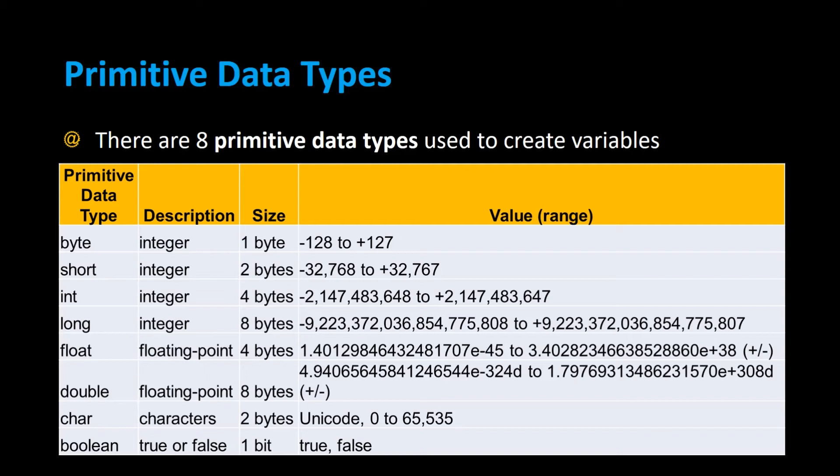There are eight primitive data types used to create variables in the Java programming language, and this table shows all eight of them. The first four are the integer data types: byte, short, int, and long.